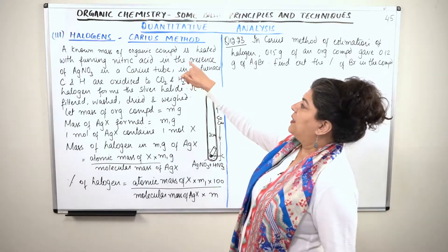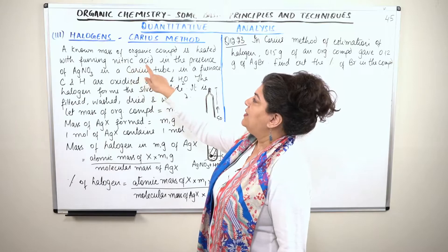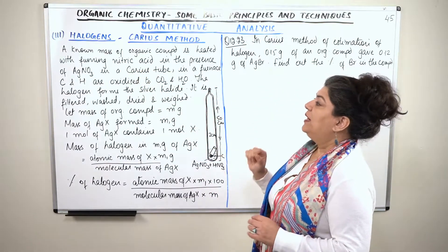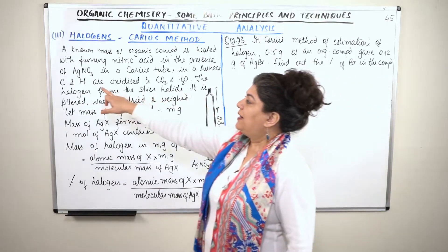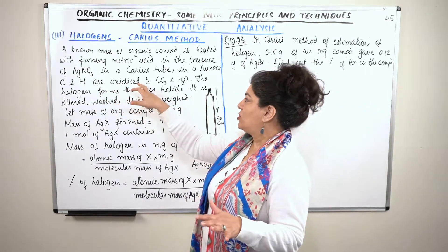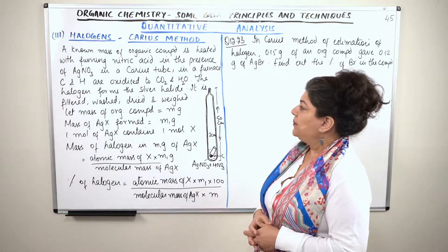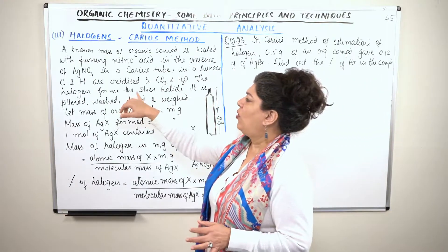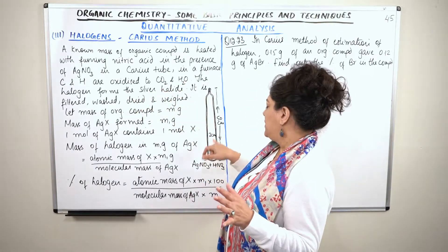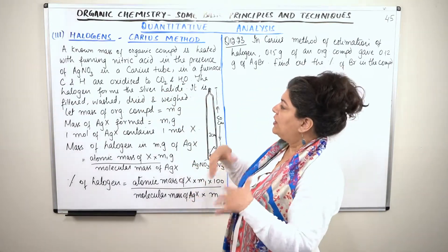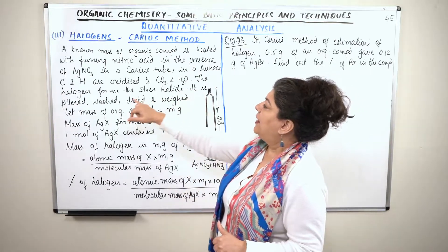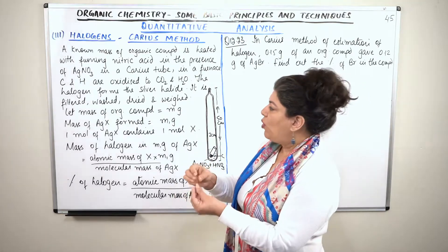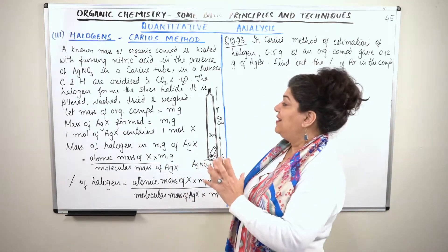To summarize: a known mass of the organic compound is heated with fuming nitric acid in the presence of silver nitrate in a Carius tube in a furnace. At that temperature, carbon and hydrogen are oxidized to CO₂ and water vapor. The halogen forms the silver halide, which is filtered, washed, dried, and weighed.